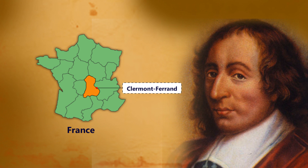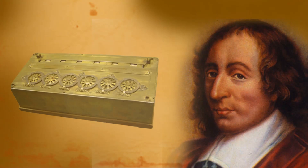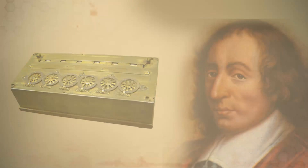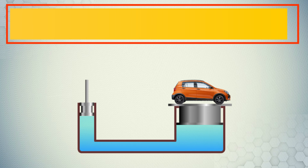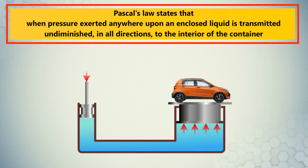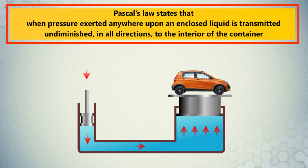Blaise Pascal was born on June 19, 1623, in Clermont-Ferrand, France. In the 1640s he invented the Pascaline, an early calculator, and further validated Evangelista Torricelli's theory concerning the cause of barometric variations.